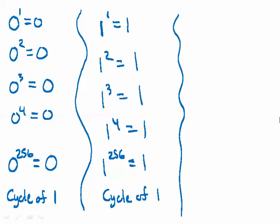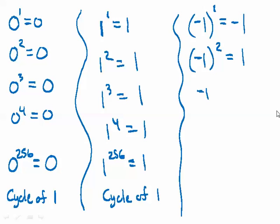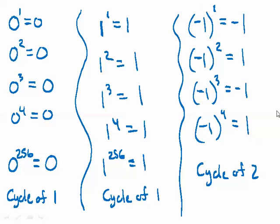A number with a cycle of 2 is negative 1. Negative 1 to the 1st power is negative 1, to the 2nd power is positive 1, to the 3rd power is negative 1 — it always switches. So negative 1 has a cycle of 2. The trick: if the exponent is even, the answer is positive; if the exponent is odd, the answer is negative.